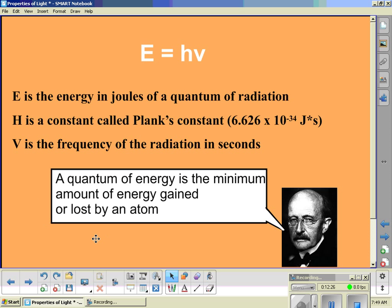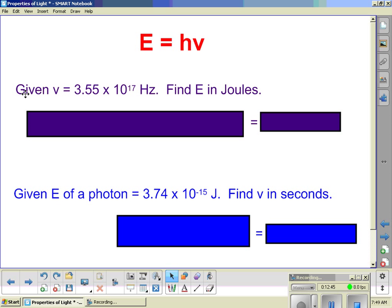So a quantum of energy is the minimum amount of energy gained or lost by an atom. And if you think about the photoelectric effect that ties in, you need a certain amount of energy in order to kick an electron loose. If the frequency is lower, then frequency goes down, then the energy goes down, and there's not enough energy to remove those electrons.